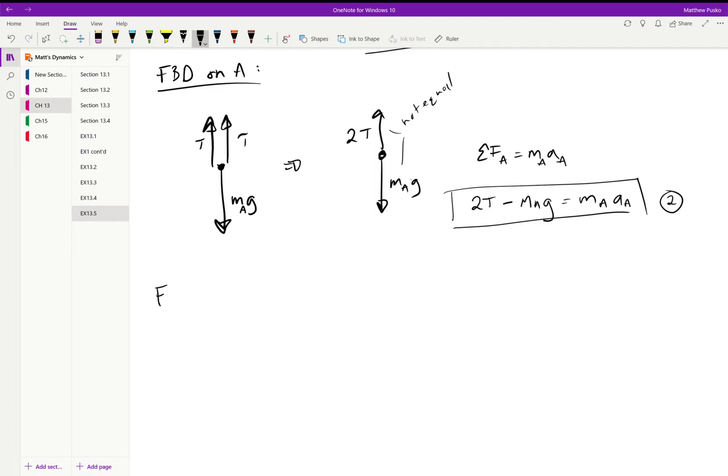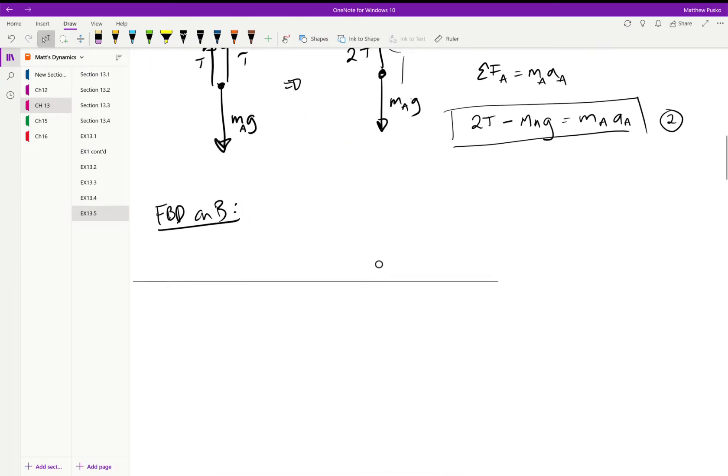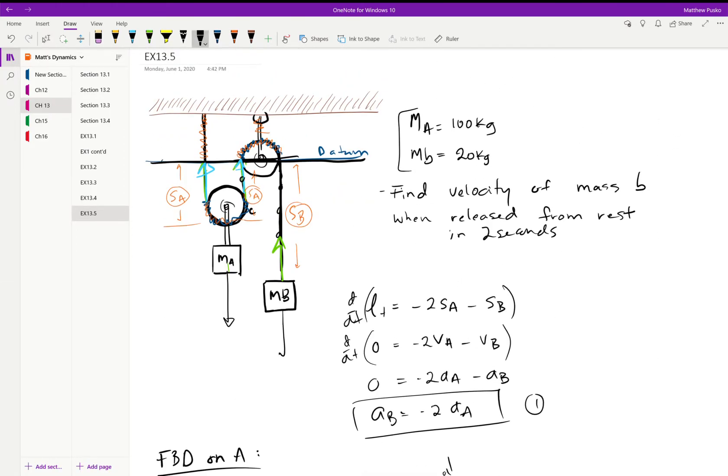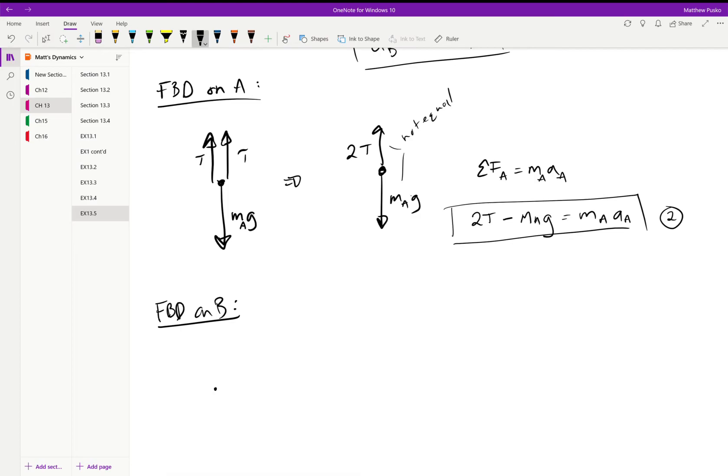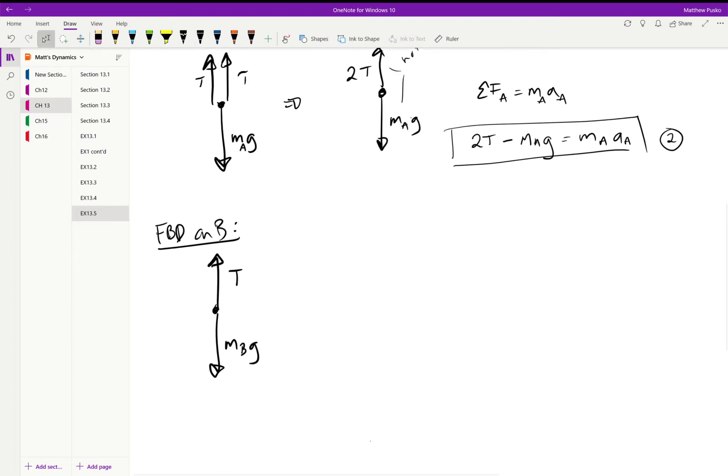Now let's do a free body diagram on B. B is going to have the weight pulling down and one tension pointed up. So mass B times the acceleration due to gravity and just one T.